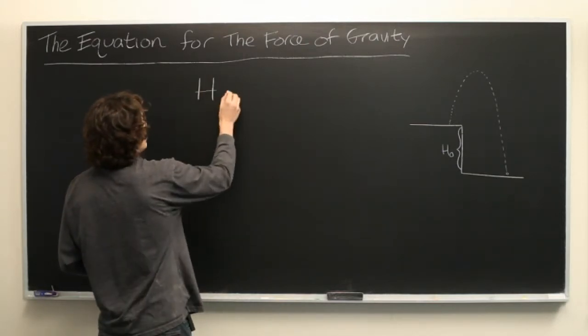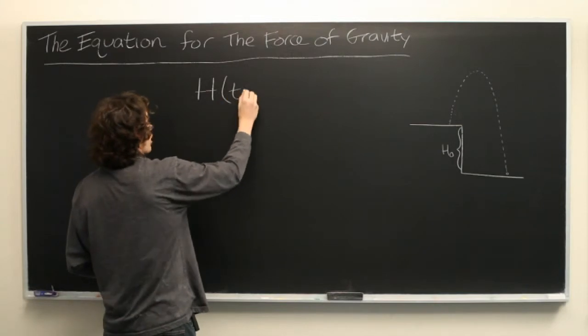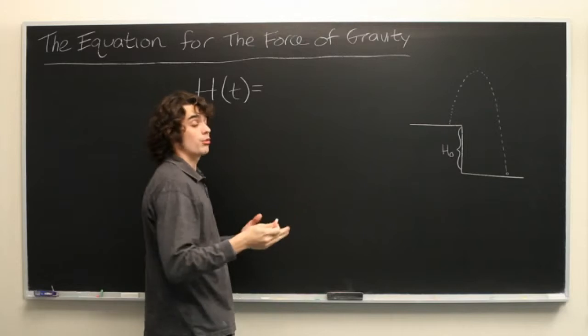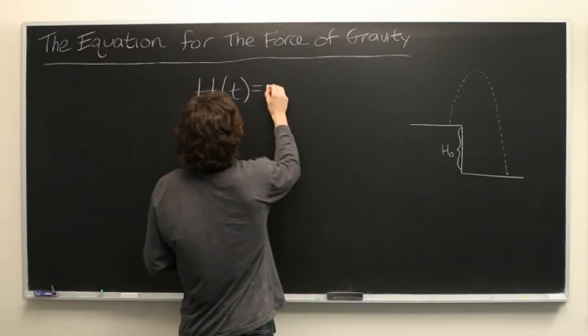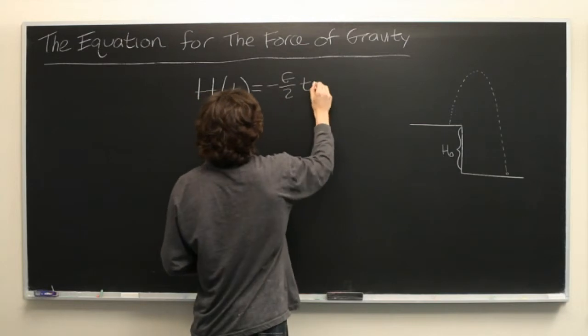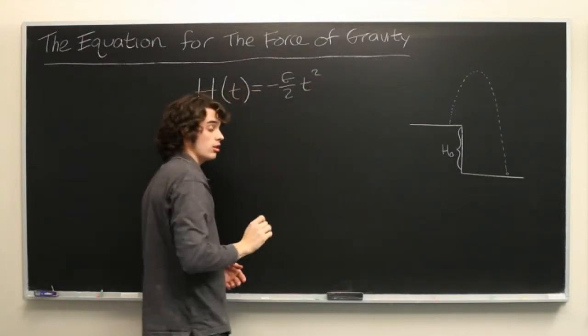We'll call this equation h(t) for height as a function of time. Assuming that the object is being thrown on Earth, this is given by negative g over 2 times t squared. We'll discuss what g is in just a second.